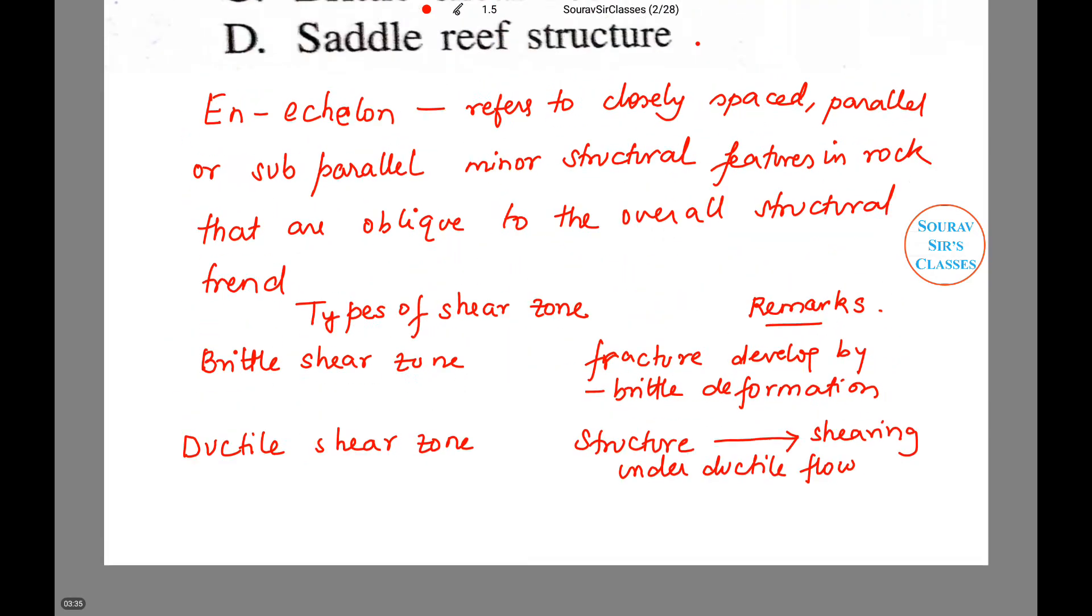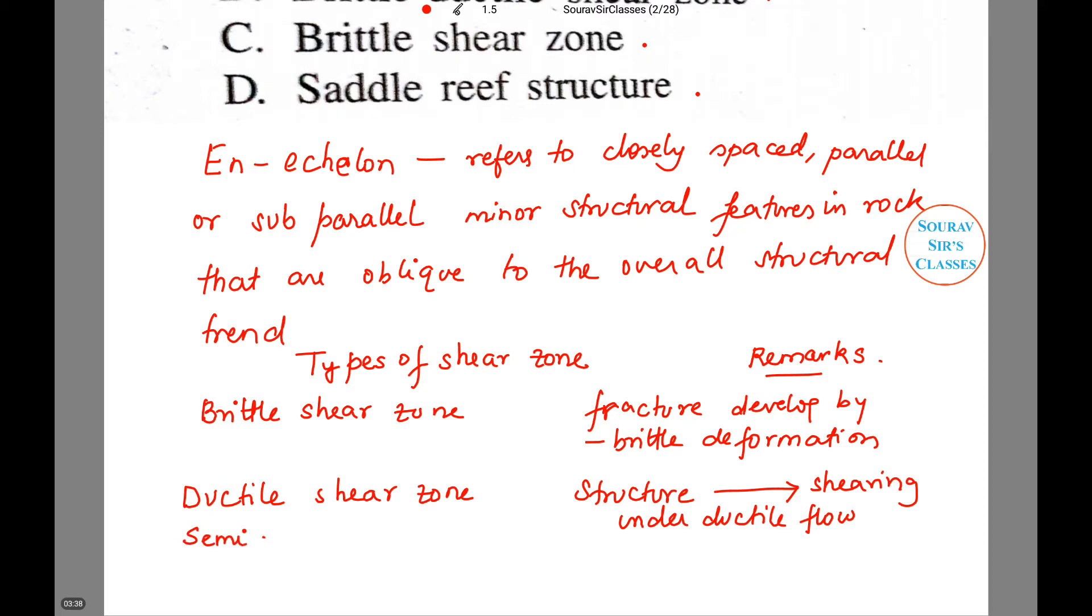The next is the semi brittle zone, brittle shear zone. Now though this is not mentioned because we are working with types of shear zone, that's why I am including this also though it is not there in the option. This is a process by pressure solution and cataclastic flow. And the last one is the brittle ductile shear zone.